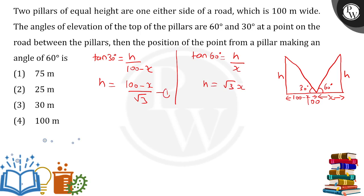So now h and h are equal, so this is 1 for me, this is 2 for me. And since I know 1 and 2 are equal, 1 equals 2, so I can equate both of them. 100 minus x upon root 3, this is equal to root 3x.